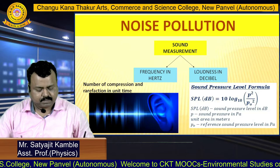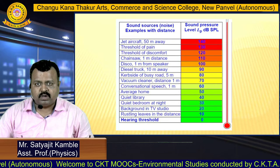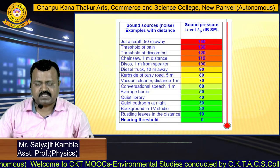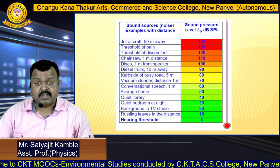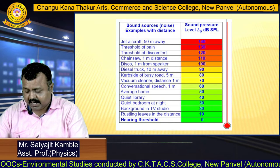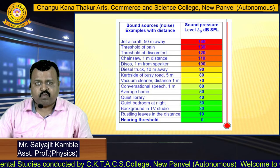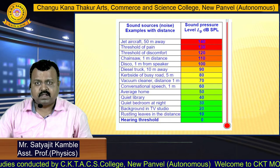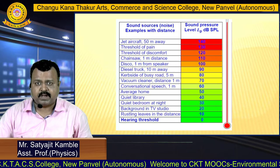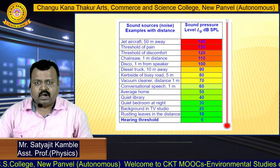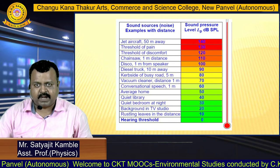According to the decibel scale, we can analyze the loudness of different sounds. The loudness of a rustling leaf is very low — just 10 decibels. On the other hand, a motorcycle or food blender emits a large amount of sound, around 90 decibels.